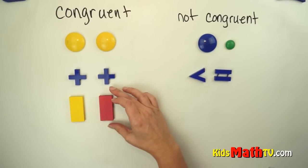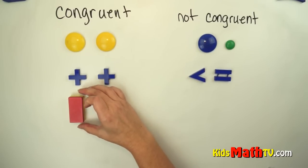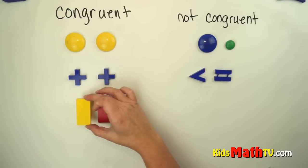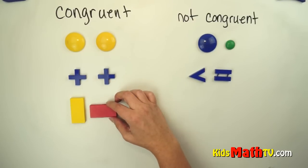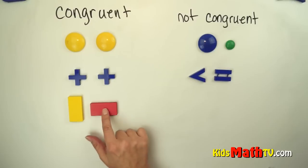These two are the same shape as well as the same size. If I put it right on top of each other, you can see they are the same shape and the same size. I can even turn it around. They are still the same shape and the same size so they are congruent.